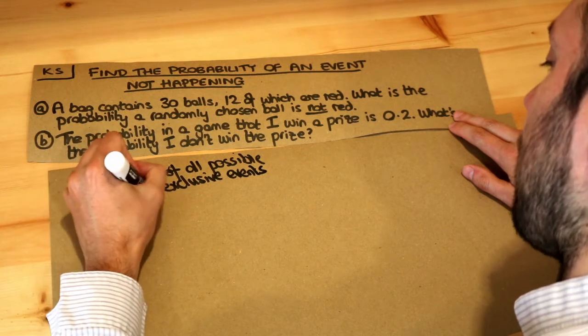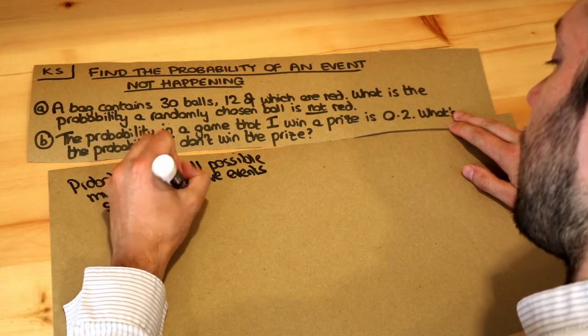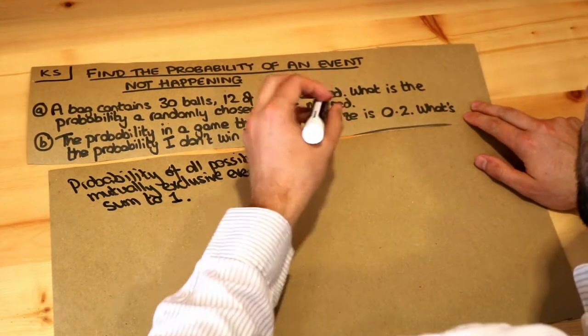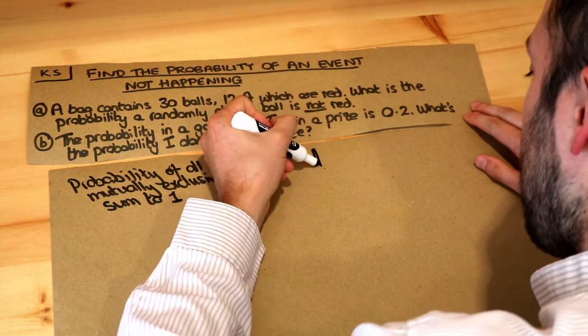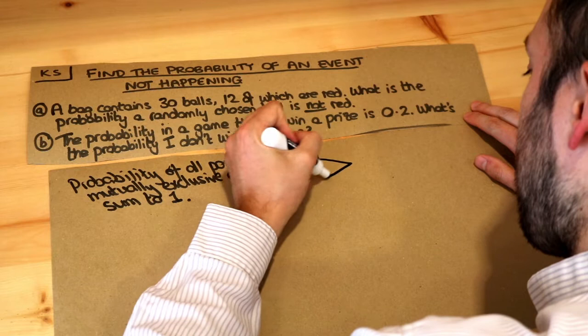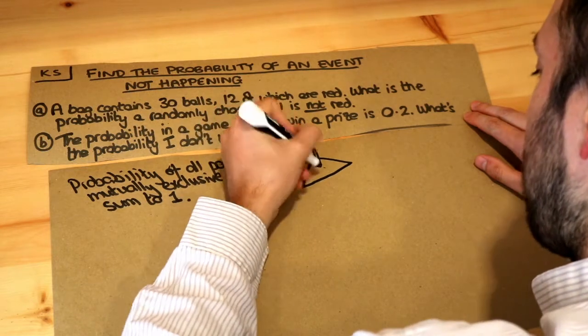So all the probabilities of everything that might possibly happen add to give one. For example, if we had a spinner, let's say it's an unfair spinner, and we had red here and we had green and blue, but it's kind of weighted towards red so it's most likely to give you red as an outcome.